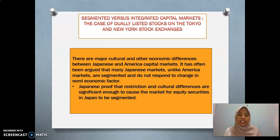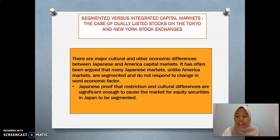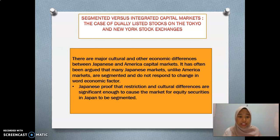My second article is about the case of newly listed stocks on the Tokyo and New York Stock Exchange. This article analyses price and returns for 17 stocks which are newly listed on the Tokyo and New York Stock Exchange. In this article, these two countries simultaneously violate the Law of One Price (LOP). There are major cultural and other economic differences between the Japanese and American capital markets, and it has often been argued that the Japanese market is unlike America because it is segmented and does not respond to changes in poor economic factors. Japanese restrictions and cultural differences are significant enough to cause the market for equity securities in Japan to be segmented.